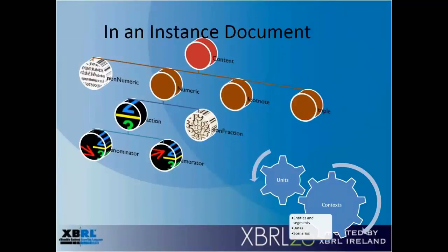Inside instance documents, you'll see things that are numeric and things that aren't numeric. You'll see footnotes — the little things that appear at the bottom of the page with a superscript pointing to a fact or multiple facts. When you look at numbers, you may see fractions or non-fractions, and fractions will have denominators and numerators. All these factual items will point to units of measure and contextual information: who is the organization, what is the breakdown, what is the reporting date, what is the business scenario. The XBRL 1.0 specification lays all this out, and the Dimensions 1.0 specification extends it with more for multidimensional data.